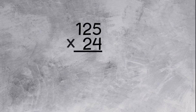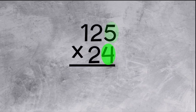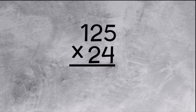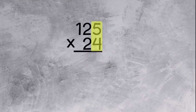Let's multiply 125 times 24. We will start by multiplying the 4 with the 5, then the 4 with the 2, and then the 4 with the 1. Then we will repeat the process with the 2 and the 5, the 2 and the 2, and the 2 and the 1.